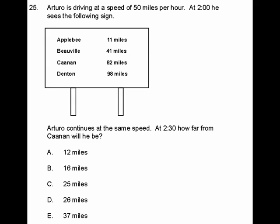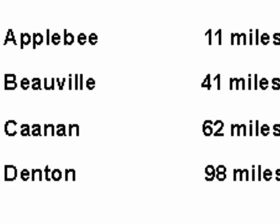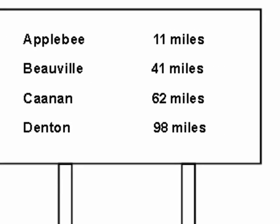Arturo continues at the same speed. At 2:30, how far from Canaan will he be? I hope you're able to see the sign on the video screen. If not, I will tell you that the distance from Canaan is 62 miles at 2 o'clock.